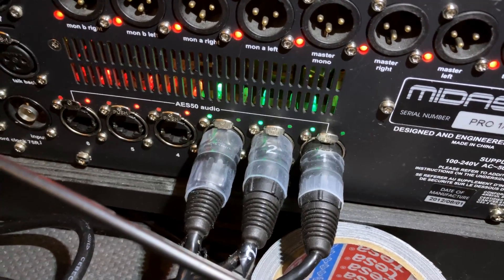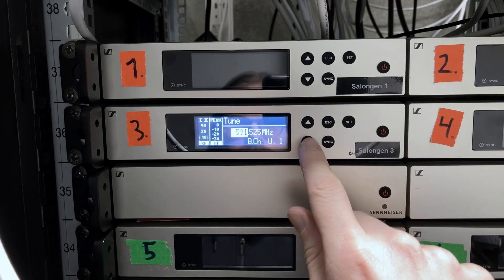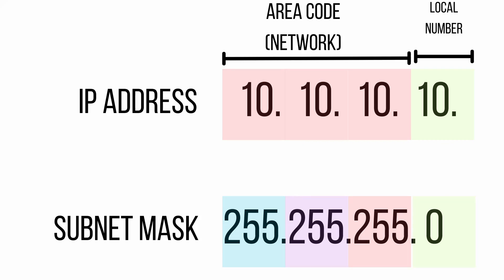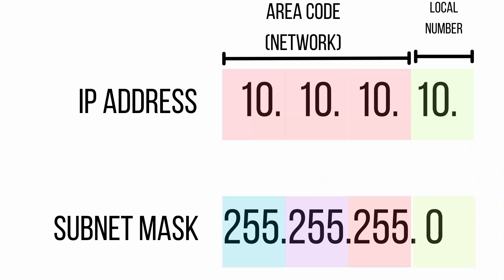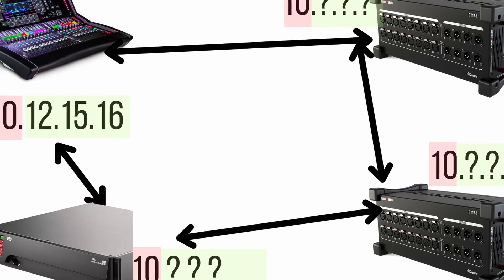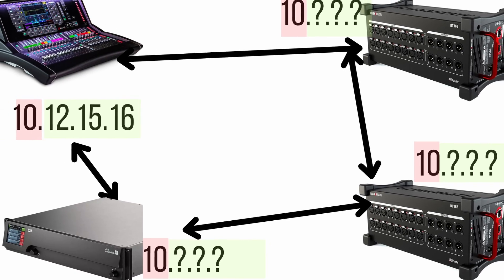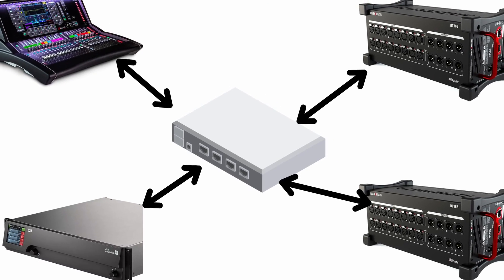With audio devices, we don't tend to have so many things connected to the network, so we don't need as many IP addresses. It's normal for the subnet mask to be 255.255.255.0. That means the first three sections of the IP address are the area code, and the last section allows 255 numbers for devices — 255 phone numbers within that country, meaning 255 devices can communicate easily with each other without a router.